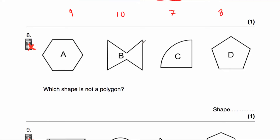Question number eight: we've got shapes A, B, C, and D, and we've been asked which shape is not a polygon. A polygon is a shape with straight sides only. Shape A is a polygon — it's a hexagon with six straight sides. Shape B is also a polygon with six straight sides, so it's a hexagon too. Shape C is a quarter circle, and it's not a polygon because it doesn't have only straight sides. Shape D has one, two, three, four, five straight sides only — so that's a pentagon and therefore a polygon. Shape C is not a polygon.